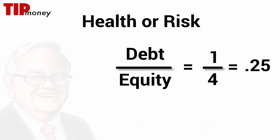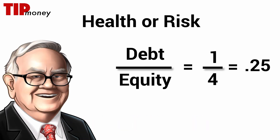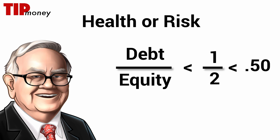Warren Buffett typically likes to find companies with a debt-to-equity ratio below 0.5, but it really depends on the industry and your personal preference for the amount of risk you're willing to assume — that is a choice you will have to make yourself.